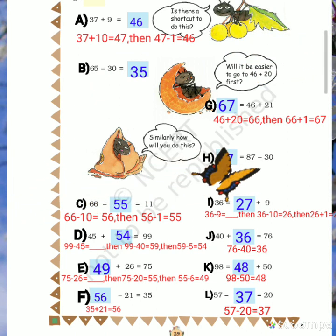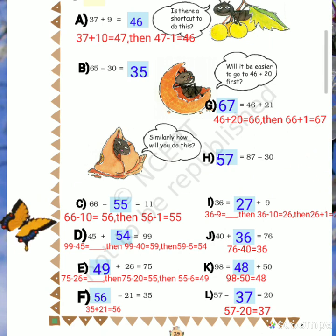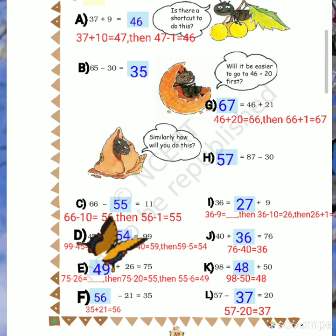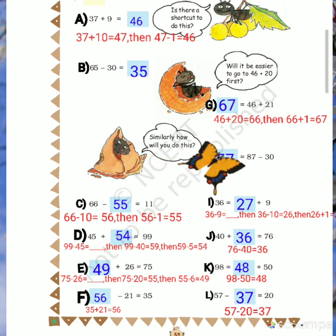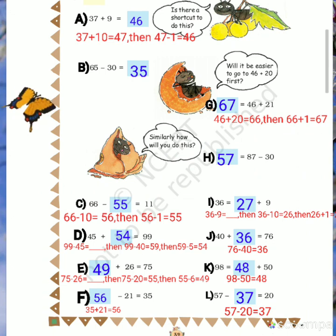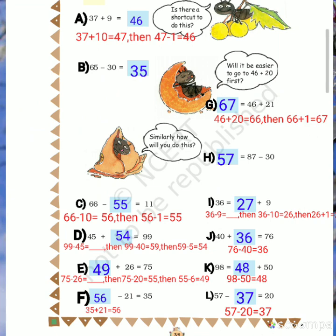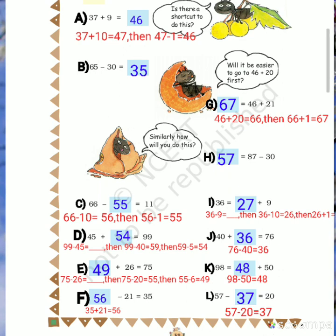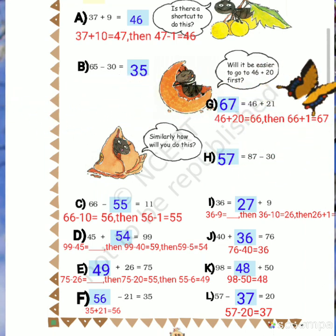F: dash minus 21 equals 35. From which number do you subtract 21 to get 35? Notice the difference between C and F. In C, you had to find the second number, so you subtracted from 66. But in F, you have to find the first number. So for F, add 35 and 21 to get the answer.